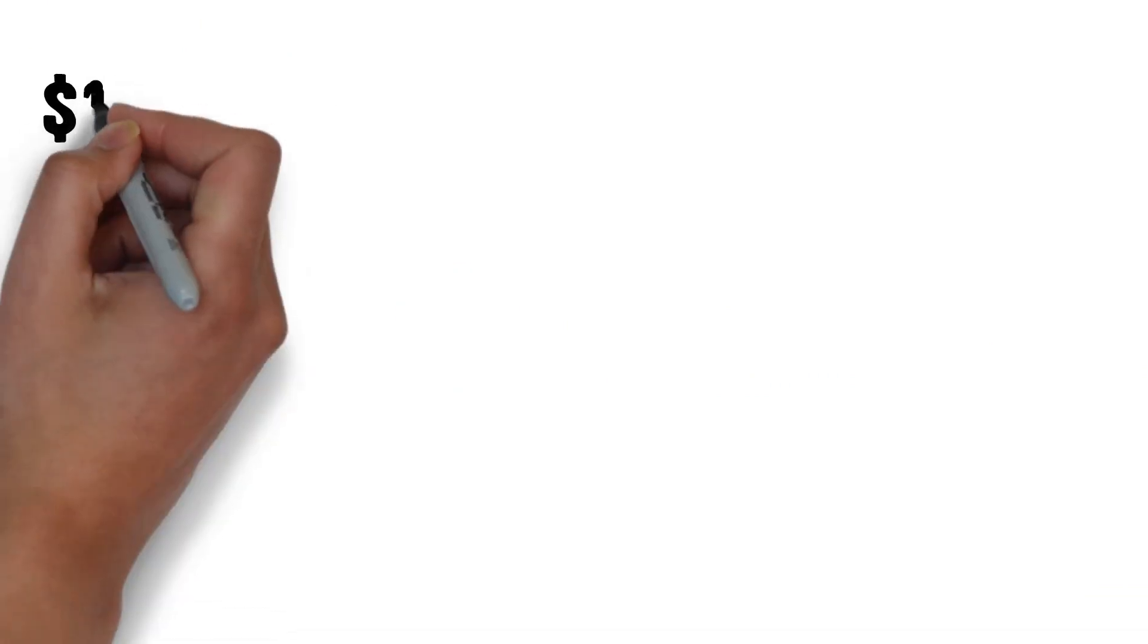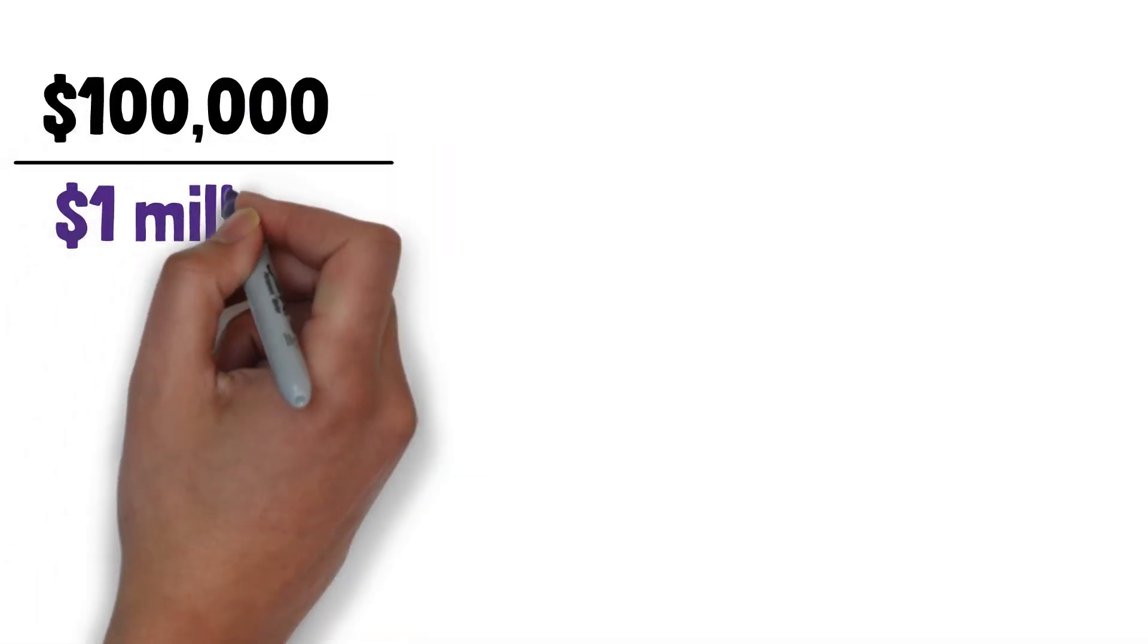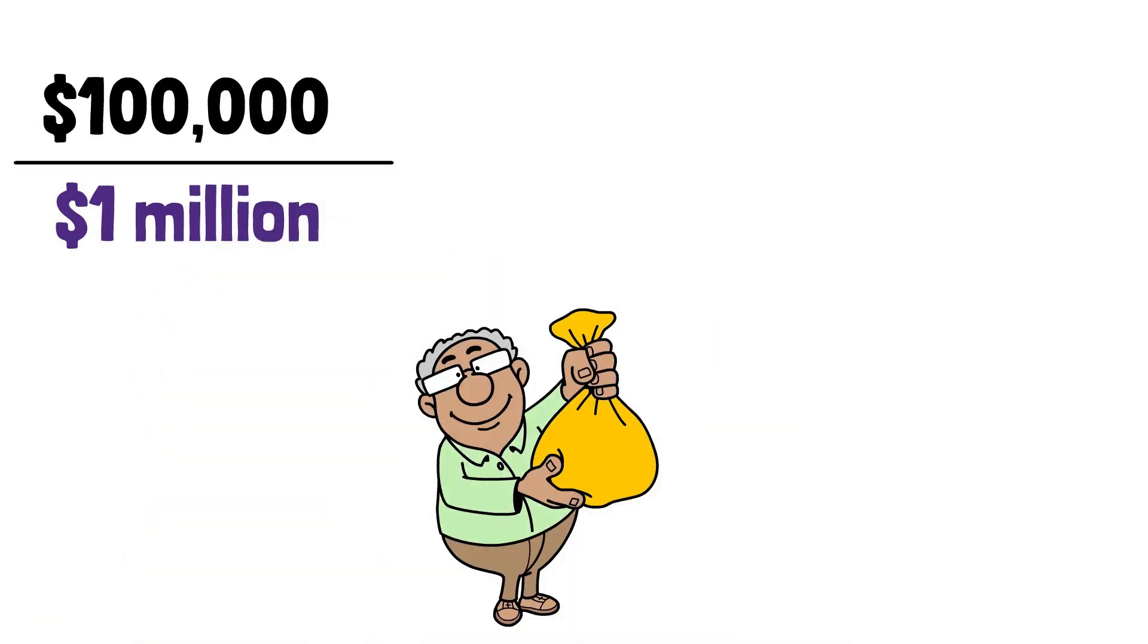You've proven to yourself that you can do hard things consistently. Once you've built the behaviors required to reach $100,000, the habits that carry you to $1 million are already in place. Wealth stops being an emotional battle and becomes a mechanical process.